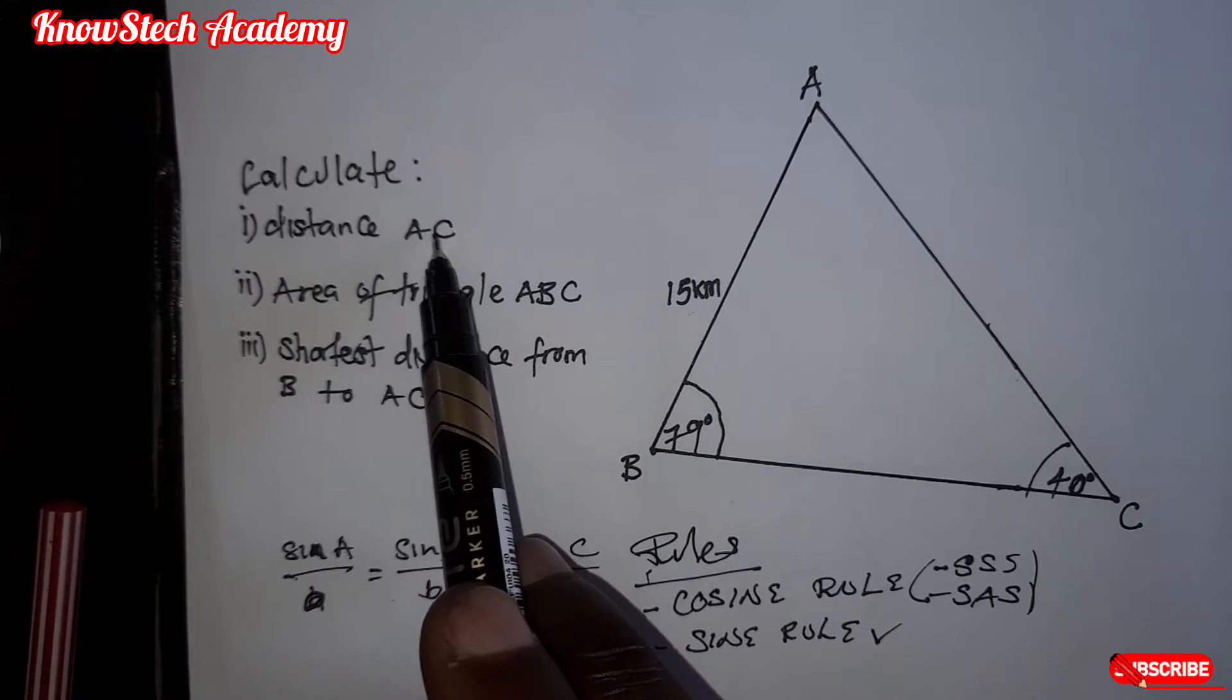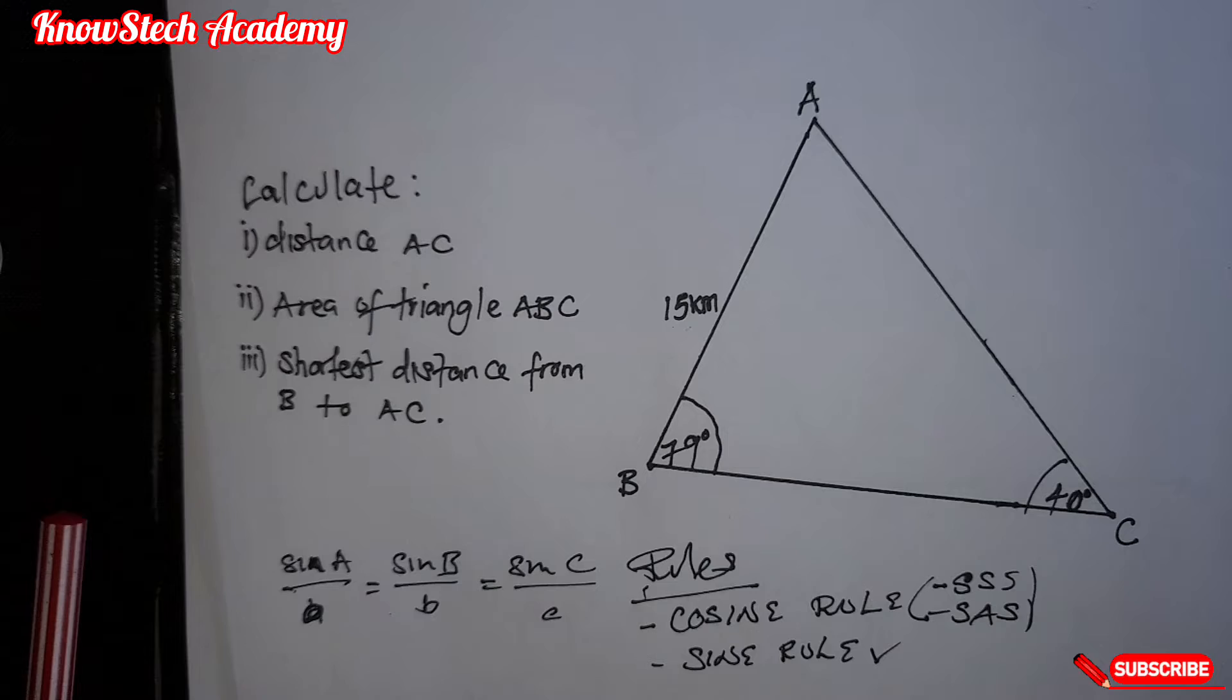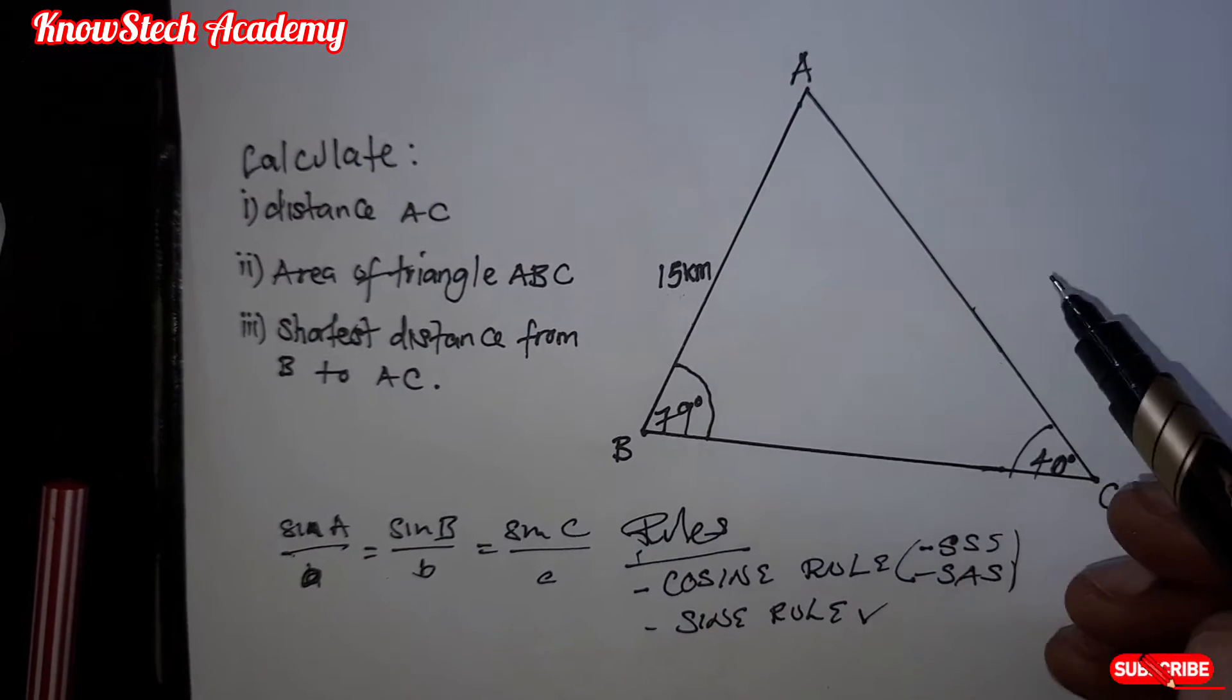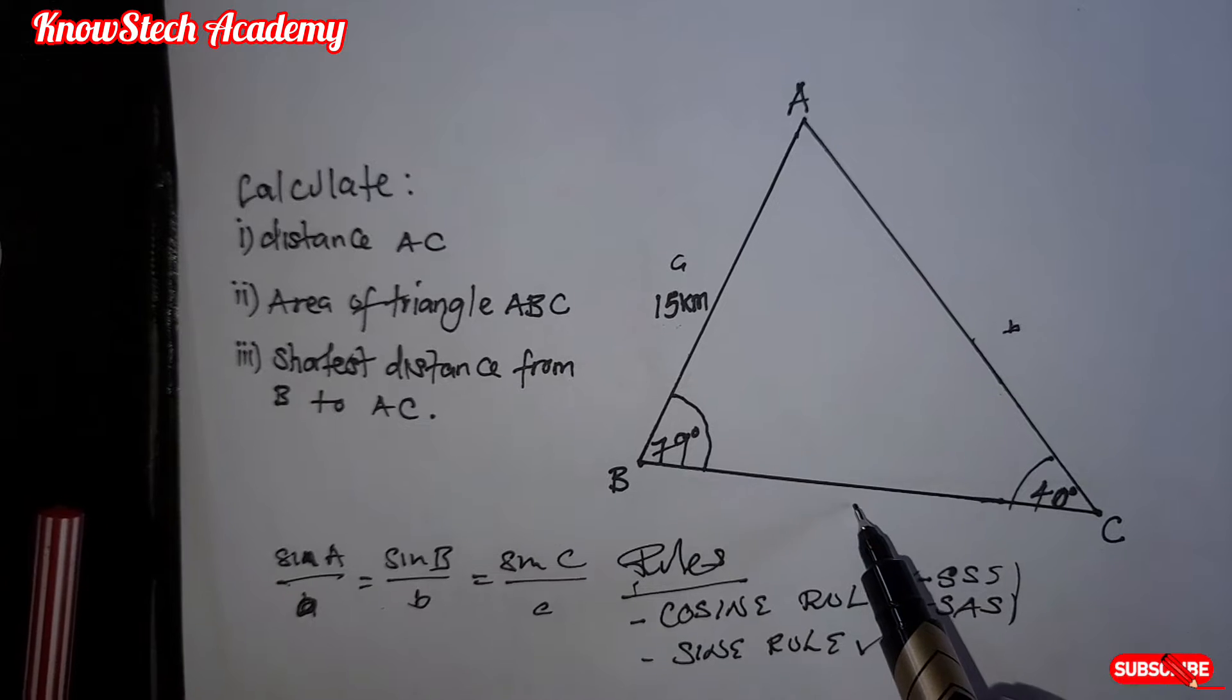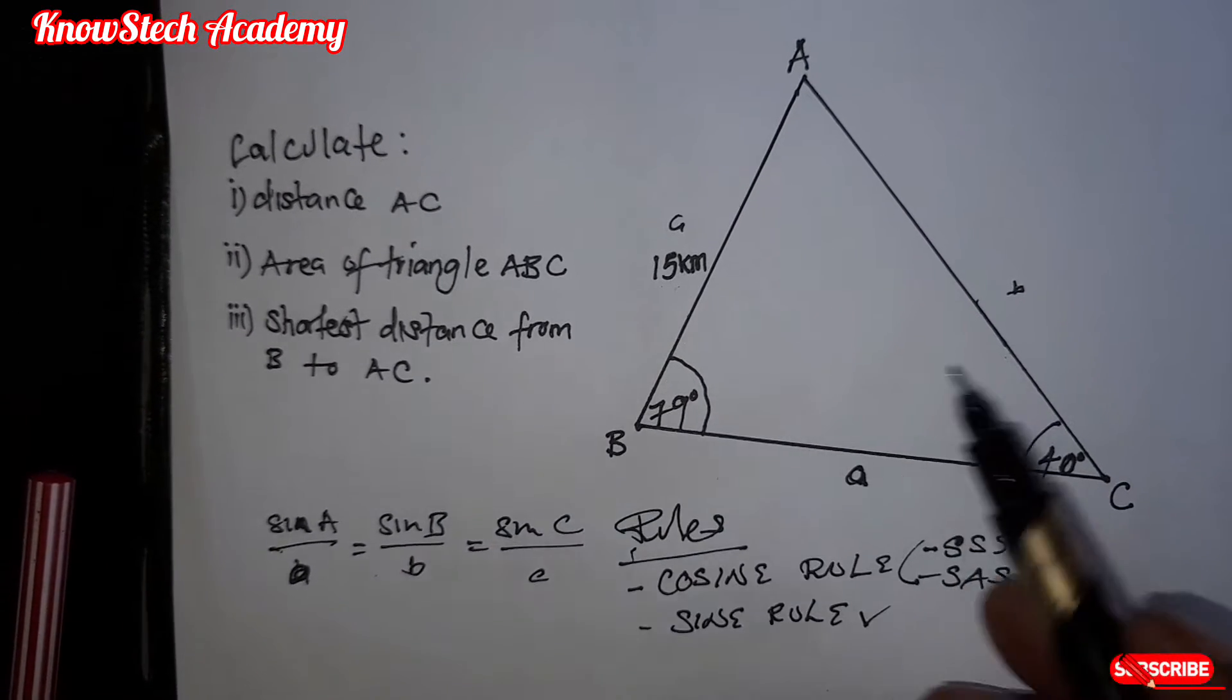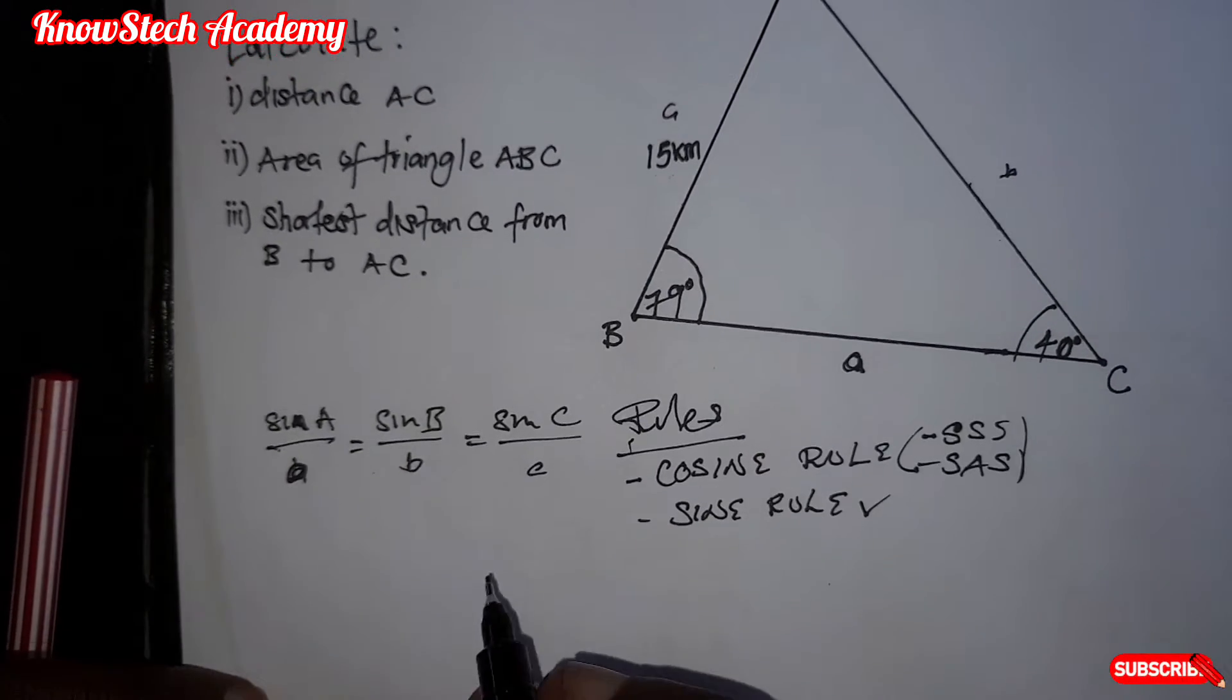So, in this case, the first question we are asked to find distance AC. So the first thing, we are going to write sides. So opposite of this side B is this one. So I'm going to write small letter b. Opposite of this C is this side. Opposite of this A is this side.